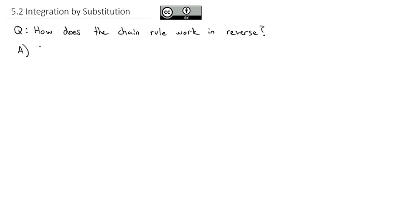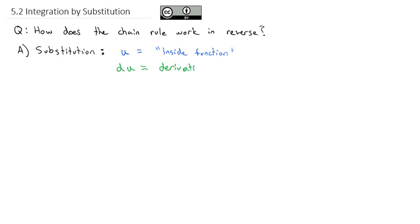The way we're going to do the chain rule in reverse is we'll use a method called substitution. The chain rule said we took the derivative of the outside times the derivative of the inside, so we need to identify the outside and the inside function. We're going to let u equal the inside function, because the chain rule takes u and multiplies by the derivative of u — we'll call that du — which is multiplied on the outside.